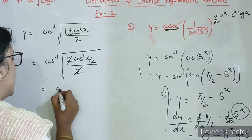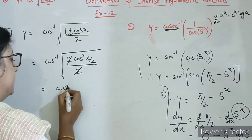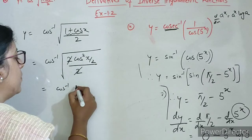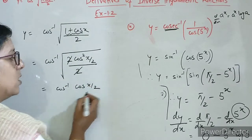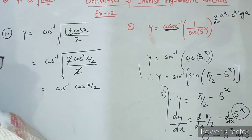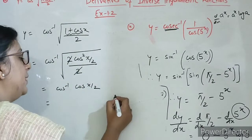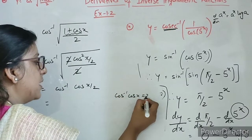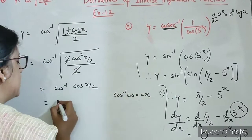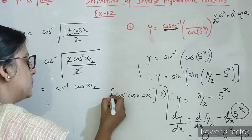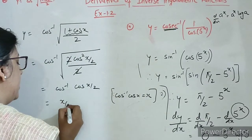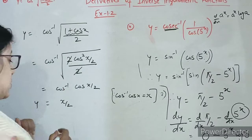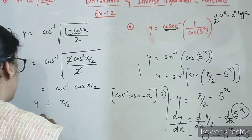Yeh 2 se 2 cancel. Now cos square x by 2 root mein hai, so yeh ho jayega cos x by 2. Now which property we can use? Cos inverse cos x is x. So using this property we can write here x by 2. So y equals to x by 2.